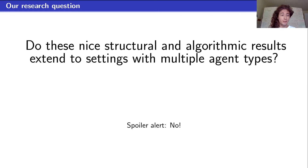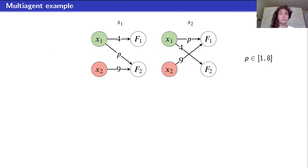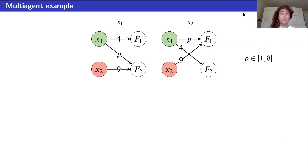Here we have an example with two agents, S1 and S2, each with separate effort conversion functions from actions (x1, x2) to features (F1, F2), where P is some arbitrary parameter. It's a lot like the previous example: there's a good action that helps both features and a bad action that only helps one, so there's an interesting trade-off similar to before.